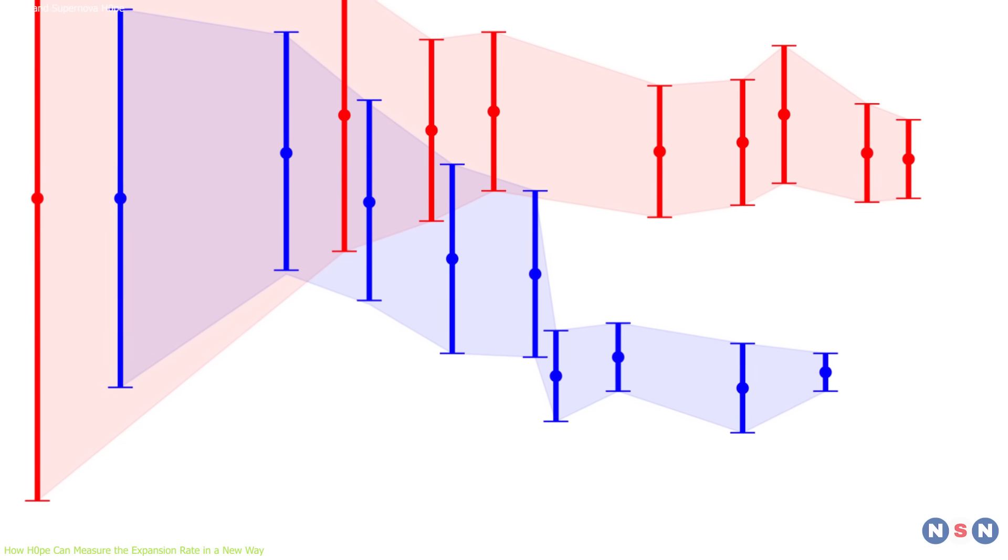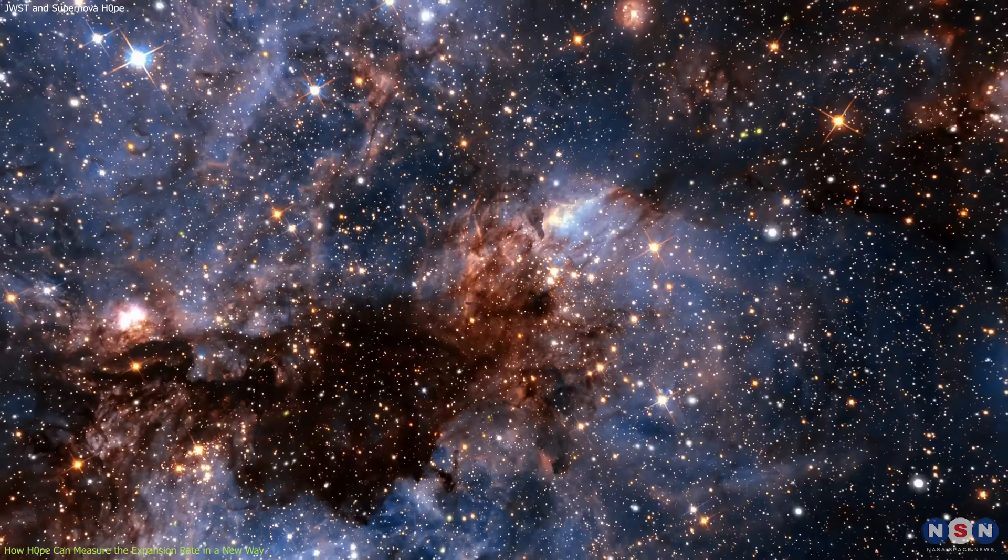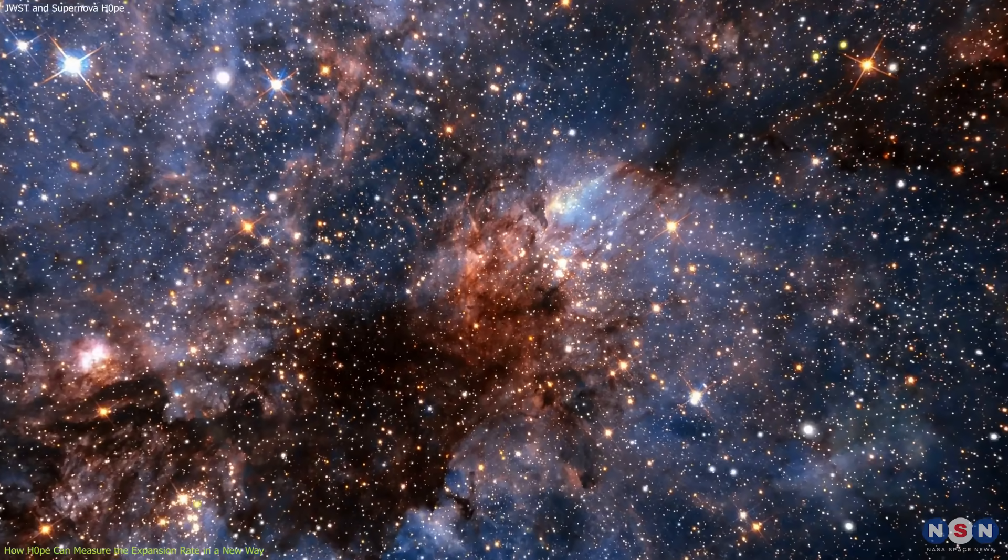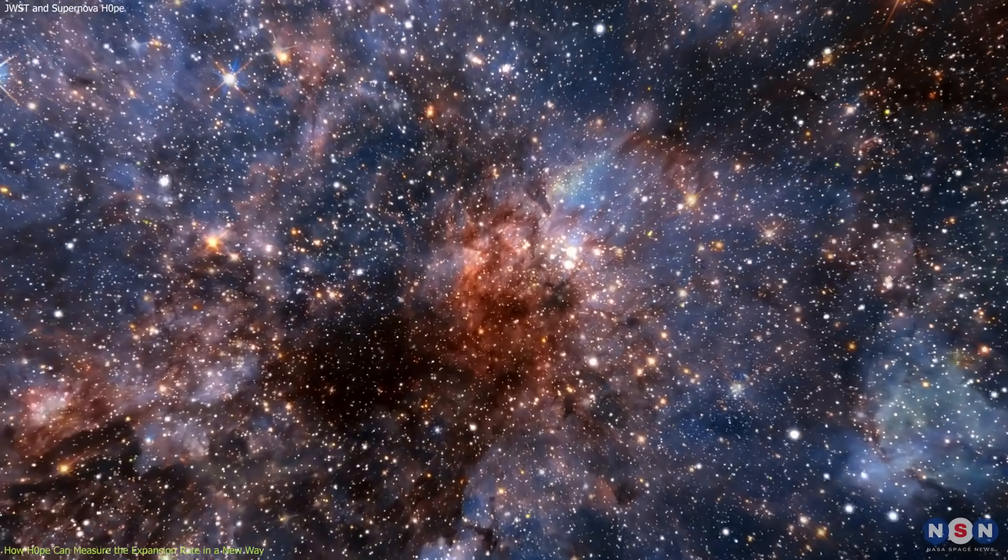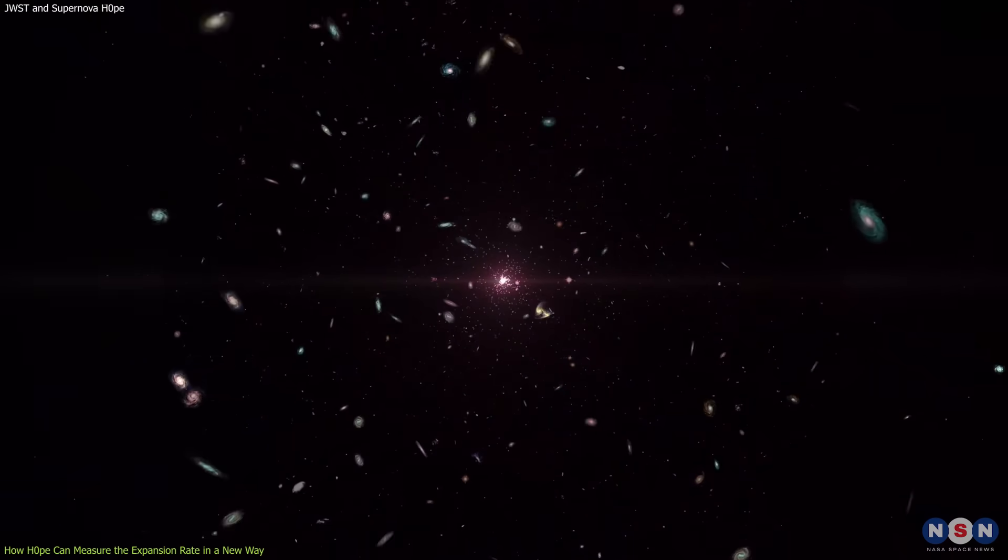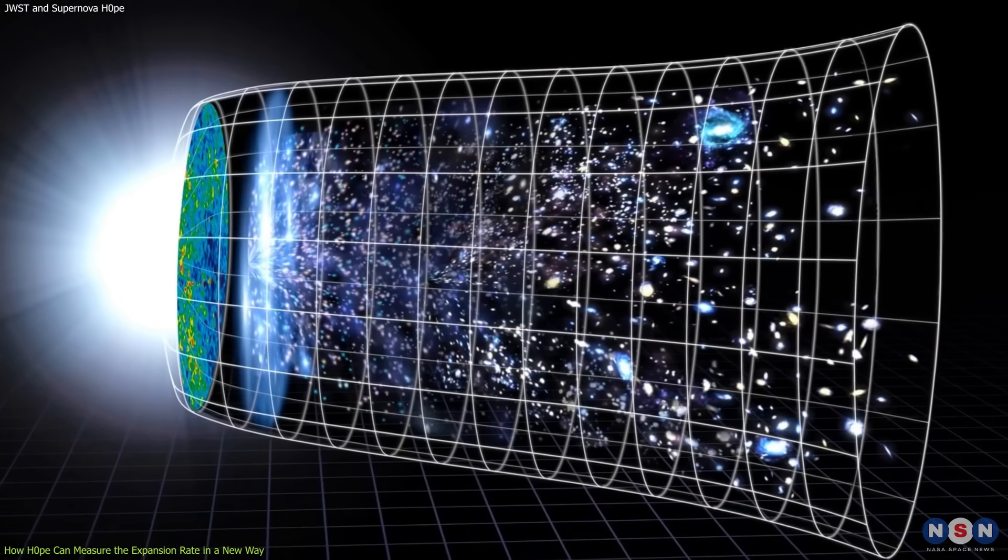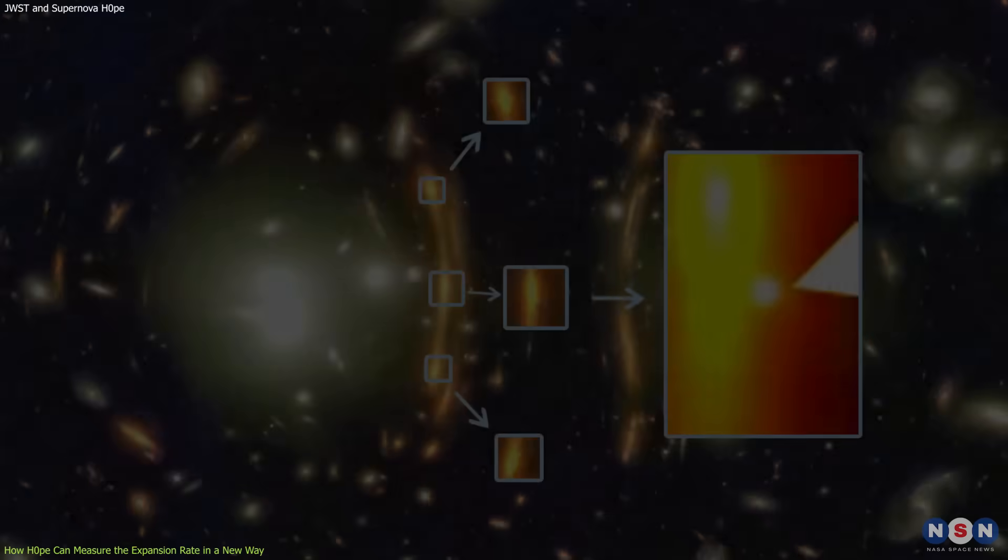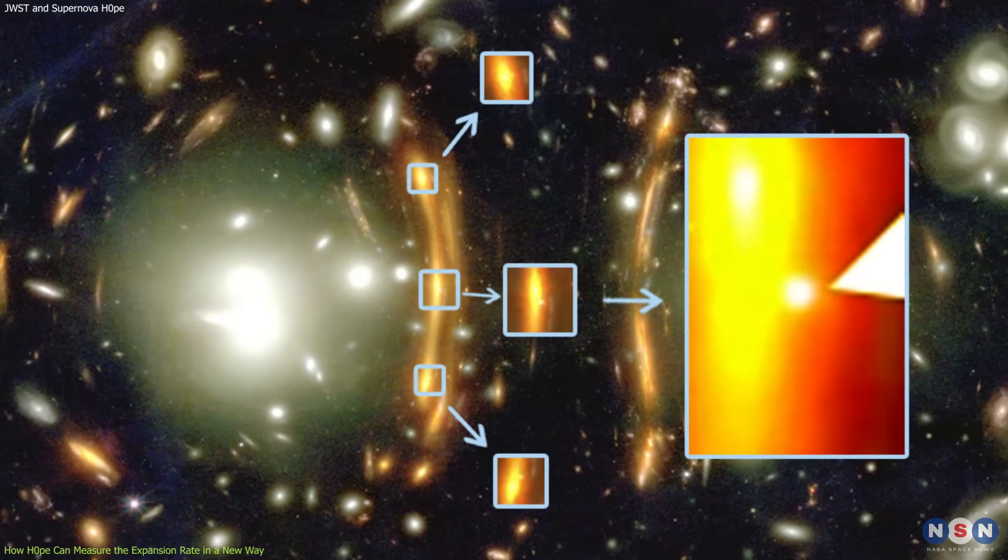So, which method is right and which one is wrong? Or are they both wrong? Or are they both right? But there is something else going on in the universe that we don't understand. These are the questions that puzzle cosmologists and challenge our current models of the universe.